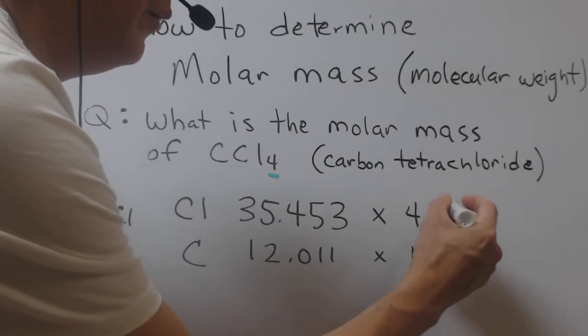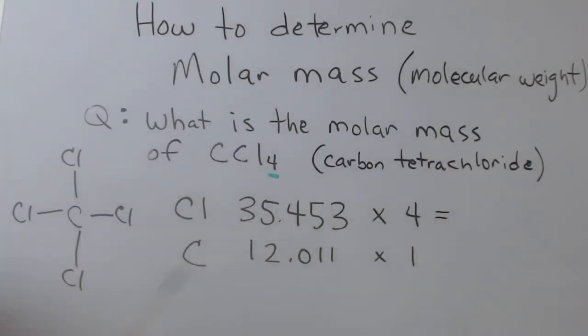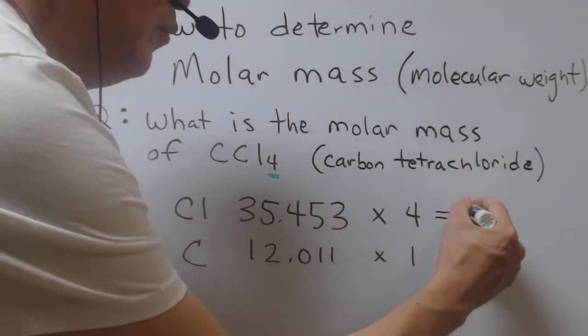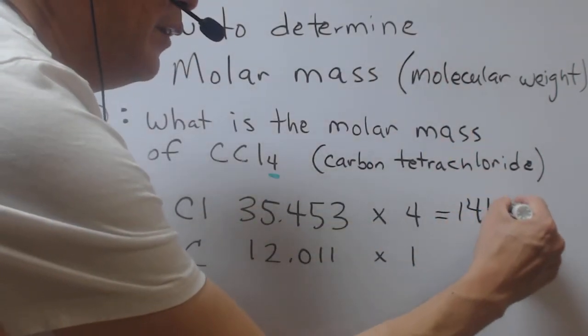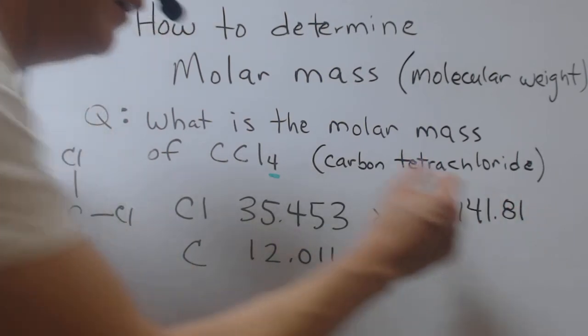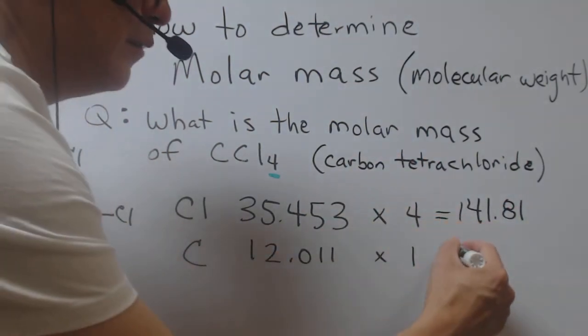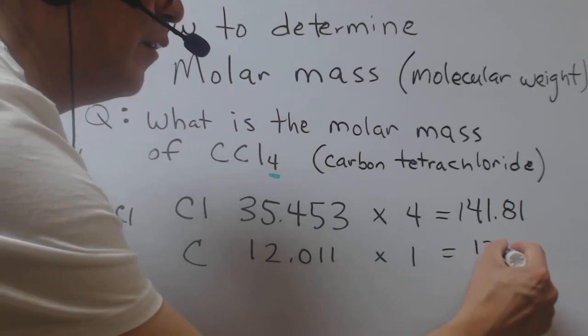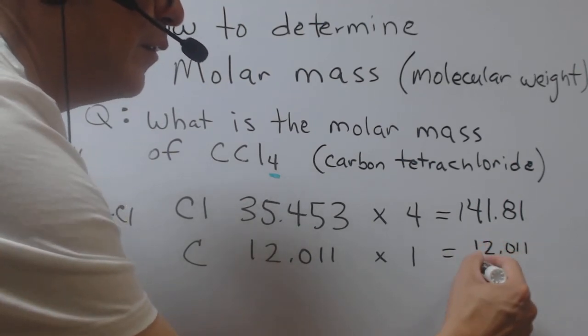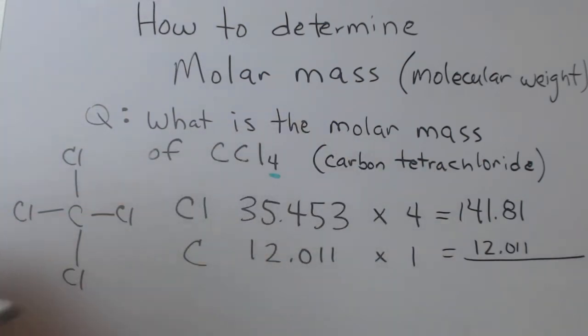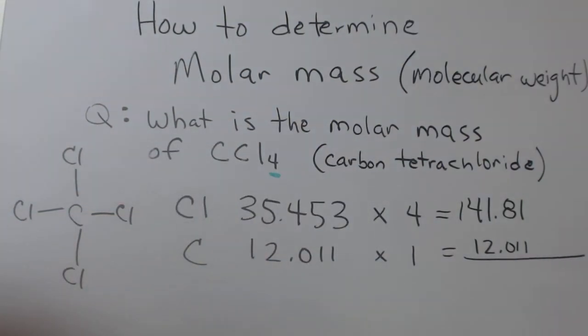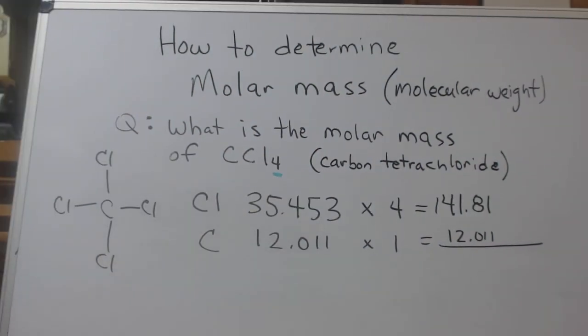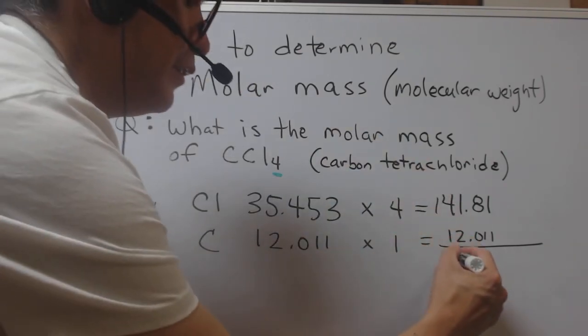Once we do the math here, 35.453 times four gives us 141.81. And obviously, 12.011 times one is the same number. We end up with a grand total of 153.82.